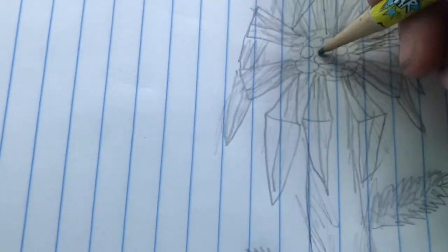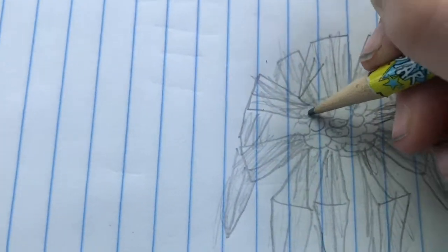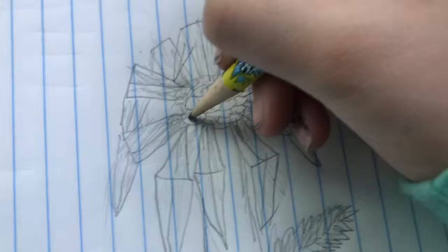Once you're all done shading, we're going to go back to the middle and make little circles and add some texture to the middle of the flower.